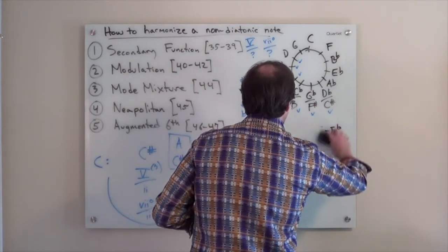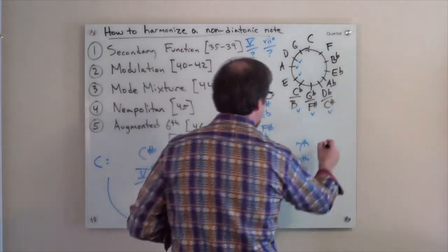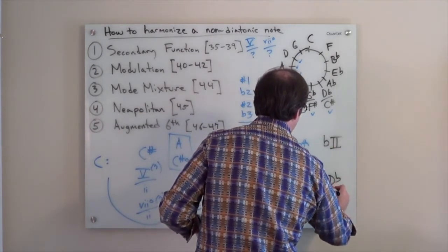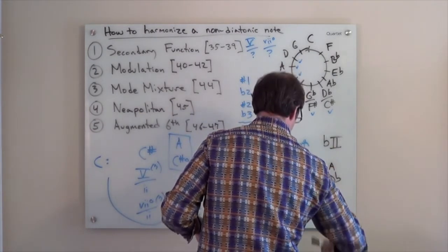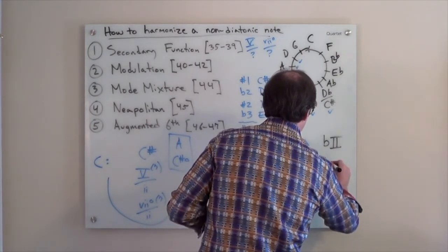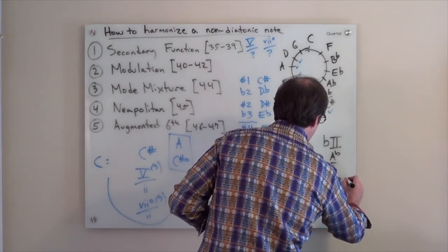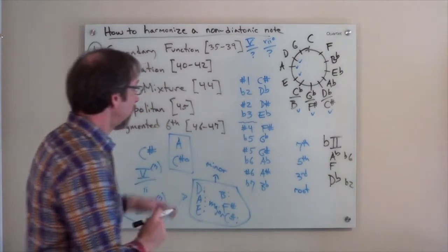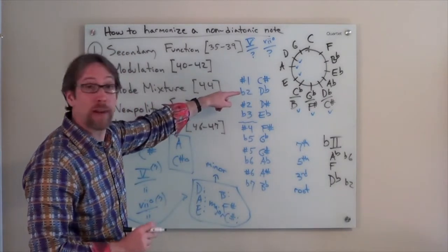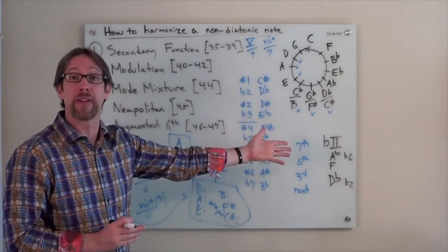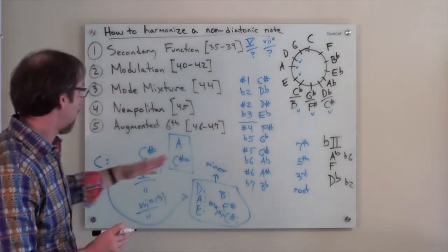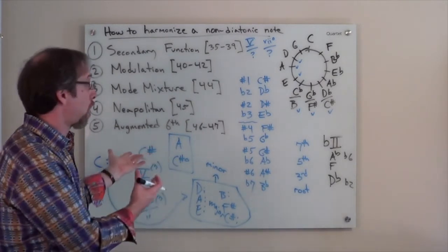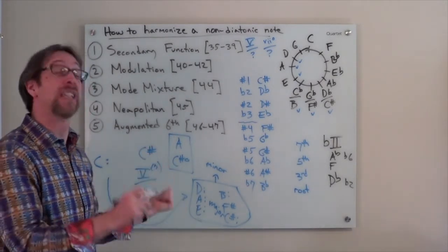When we deal with Neapolitan chords, Neapolitan chords are essentially a flat 2 in our key. In the key of C major, that would be D flat, F, and A flat, which if we convert it, we have flat 2 and flat 6. So again, if we had a D flat that we needed to harmonize, we could use a Neapolitan chord. And if you remember back, I was just saying C sharp is not the same as D flat. It's because C sharp is not in the Neapolitan chord, but D flat is.